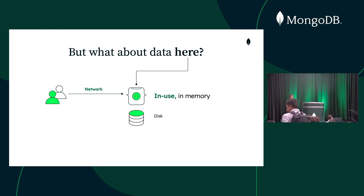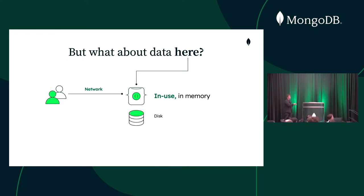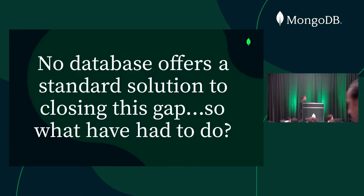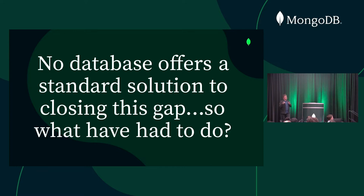What can we do when data is in memory in clear text? If we don't solve it, you can dump that data — you can do process scraping, RAM inspection, and just read the data. What MongoDB is trying to do is solve that gap. No database actually has that capability today, and we're releasing a lot of good features around encryption.